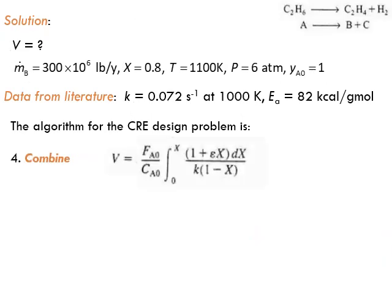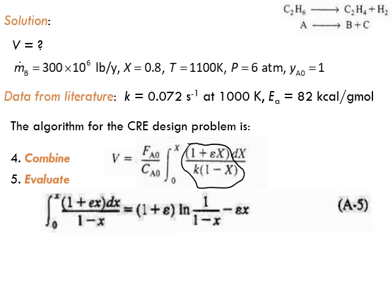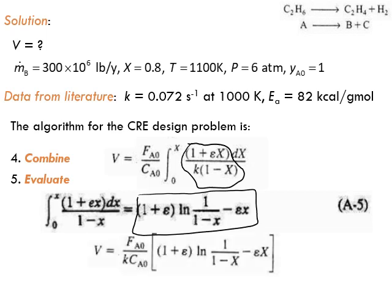The next step is to combine the previous equations. We need to find the integral of this function, so we go to the appendix. The result gives the evaluated volume as: V equals (FA0 / k) over CA0 times the quantity [(1 + ε) ln(1 / (1 − X)) − εX]. This is the equation we need to evaluate to find the required reactor volume.